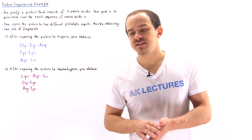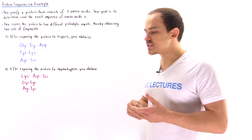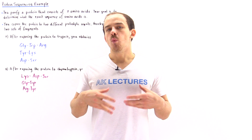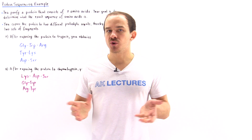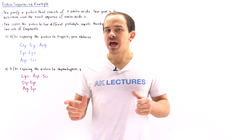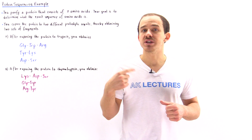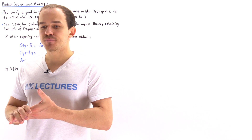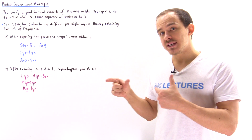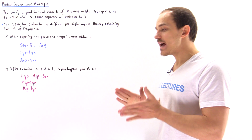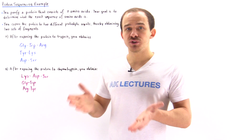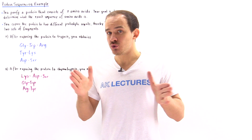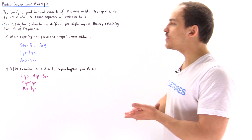Previously we discussed protein sequencing. If we want to sequence the amino acids in our protein, the first step is to break down that protein into smaller fragments using proteolytic enzymes. We can then isolate the fragments and use Edman degradation on each individual small fragment to determine its sequence. To order the fragments correctly, we use two or more different proteolytic enzymes to produce different sets of fragments, then use the overlapping regions to determine the full sequence.